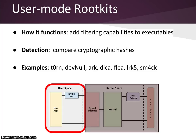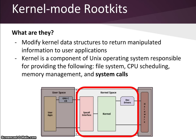In contrast to user mode rootkits, kernel mode rootkits operate at a lower level and don't replace system binaries. Instead, they modify kernel data structures to return false information to the user. The kernel is the part of the Unix operating system that handles CPU scheduling, memory management, and system calls. The user space and kernel space components communicate via system calls. A kernel mode rootkit will manipulate system calls to remain hidden and stay persistent on a compromised machine.